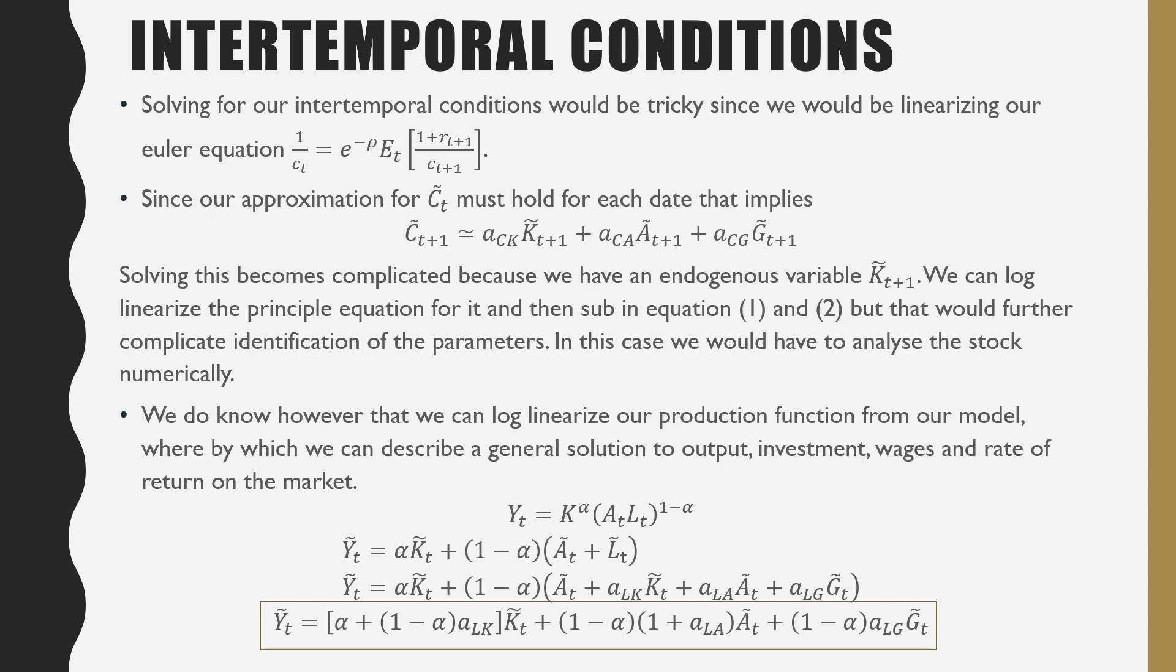Solving for our intertemporal conditions, however, are a little bit more tricky since we will be linearizing our Euler equation, which is 1 over Ct equals the discount factor times the expectation from time t of 1 plus the rate of return on the market at period t plus 1 all over consumption at t plus 1.